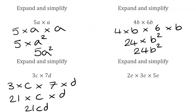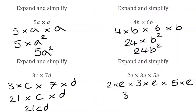For the next question we've got 2e — which is 2 multiplied by e — times 3e, which is 3 multiplied by e, times 5e, which is 5 multiplied by e. Dealing with the numbers first: 2 multiplied by 3 is 6, multiplied by 5 is 30. Then for the e terms: e times e times e — there are three of them — so that's e to the power of 3, or e cubed. The final answer is 30e to the power of 3.